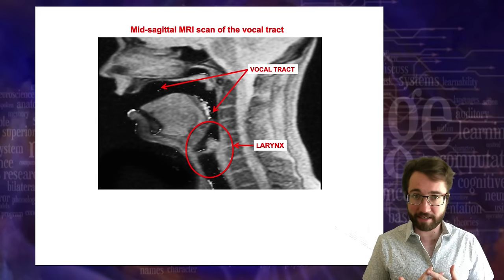The next major manner of articulation for consonants is nasal. A nasal consonant is produced by redirecting your airflow from going through your mouth to going through your nose — sounds like 'ma' and 'na.' You can tell air is flowing through your nose by holding your fingers on your nose: you'll feel vibration when you say 'ma,' but not when you say 'da' or 'ka.' Nasal consonants are produced by redirecting airflow through the nose instead of through the mouth.